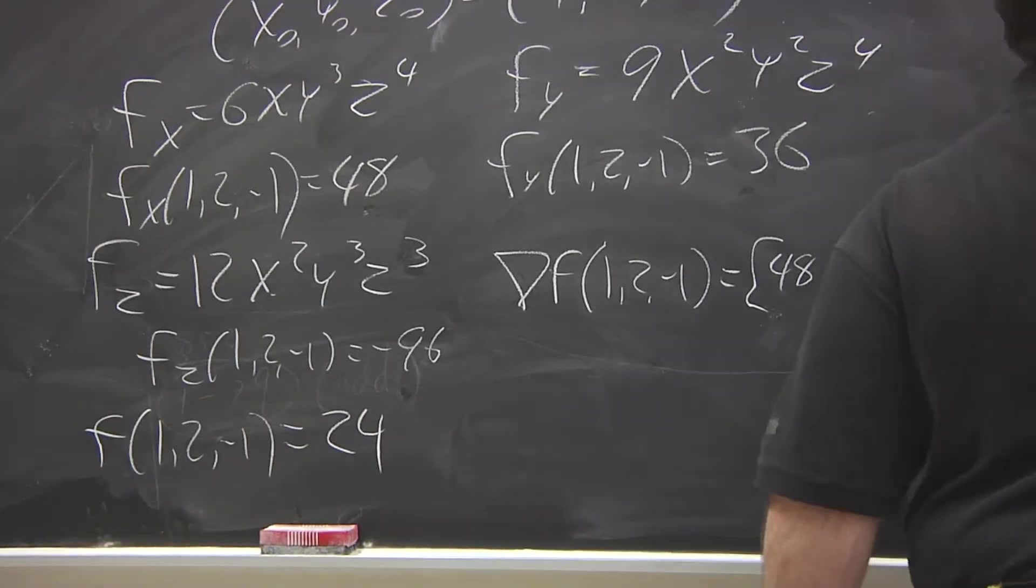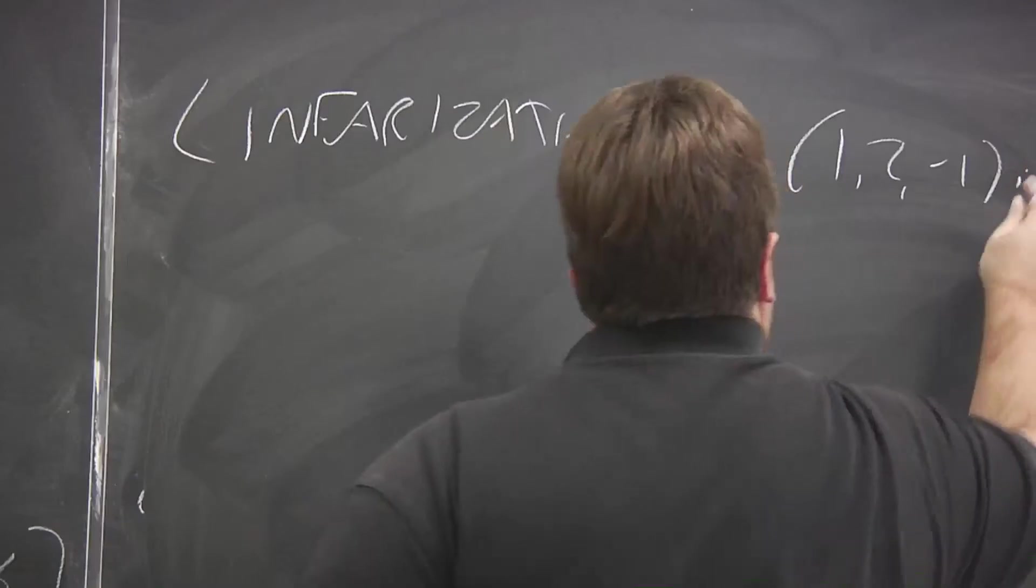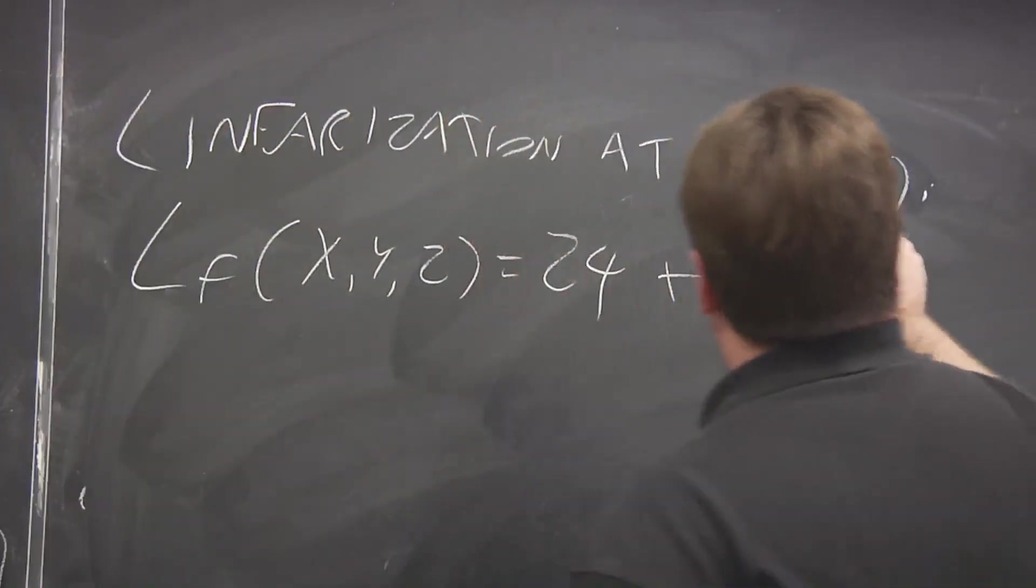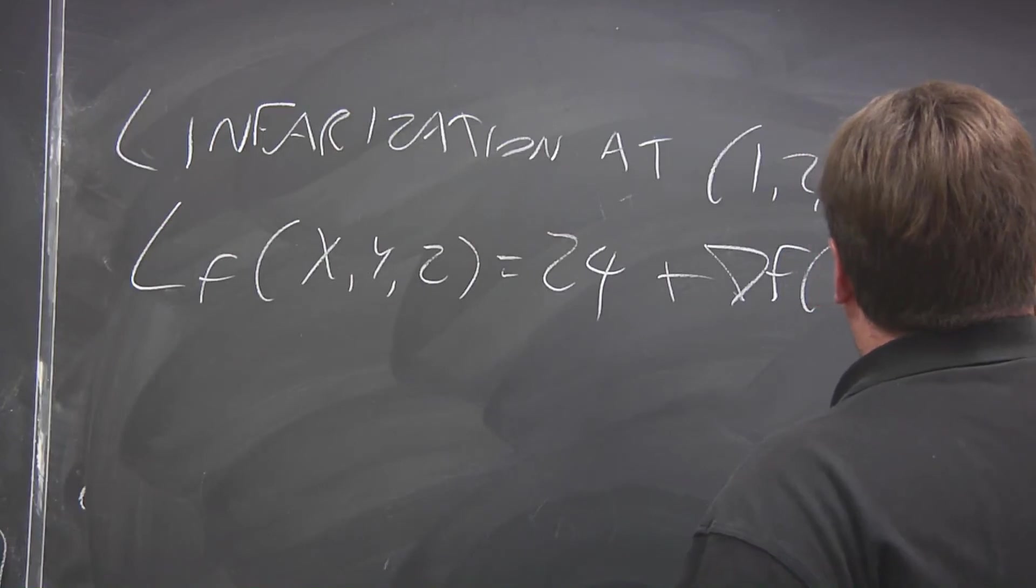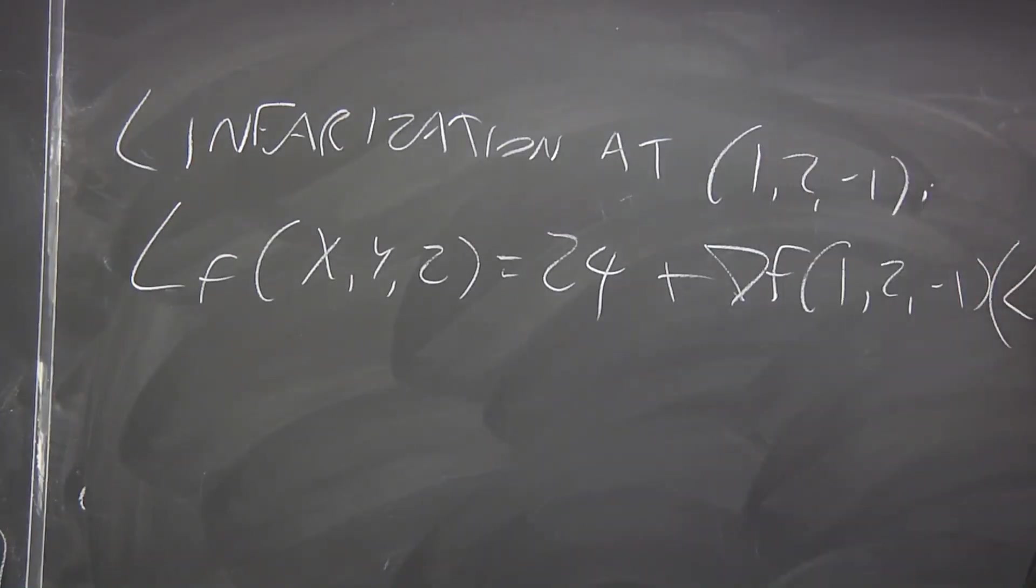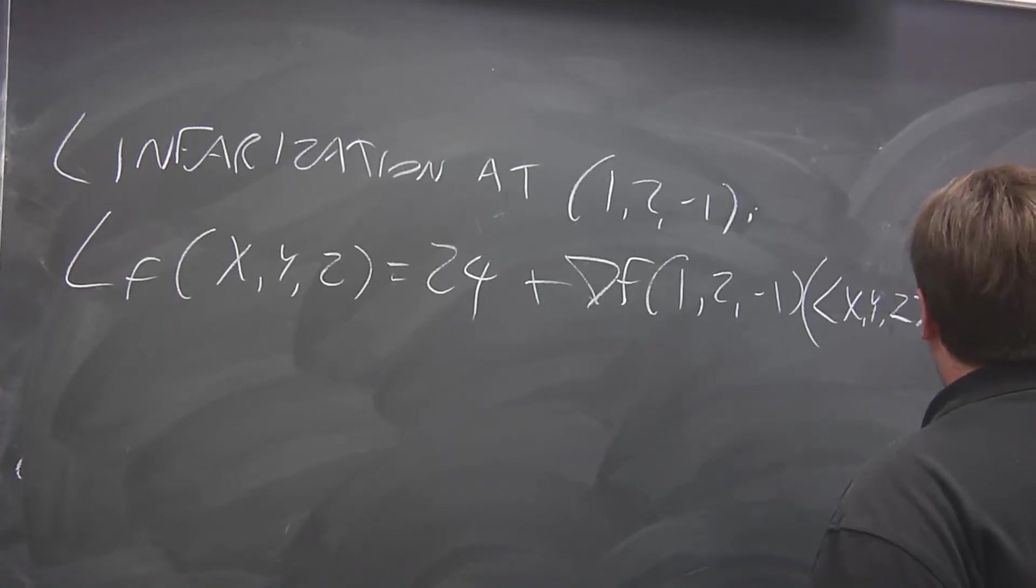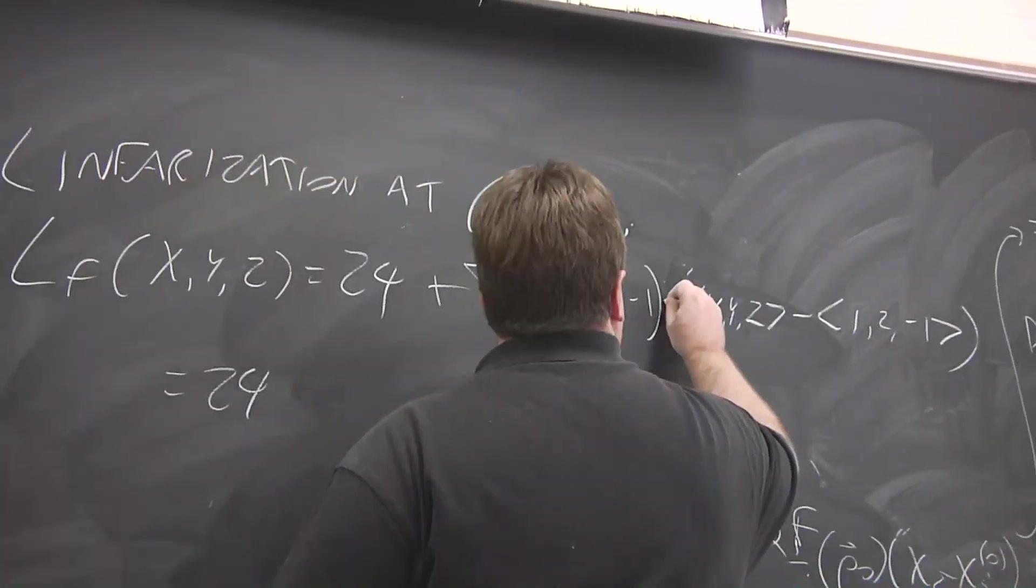So now we can write down the linearization of this function at this point. So we get 24 of the function value plus the gradient of f at (1, 2, -1) times the difference between the vectors, x, y, z, and 1, 2, -1. So we're going to get, and that's a dot product.